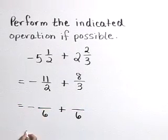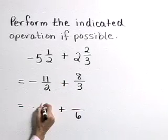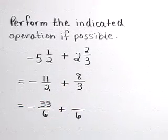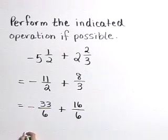Don't forget your negative sign out front. 2 goes into 6 three times, and 3 times 11 is 33. 3 goes into 6 twice, and 2 times 8 is 16.